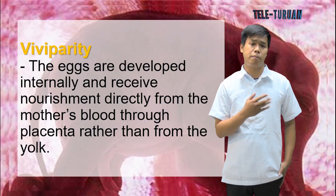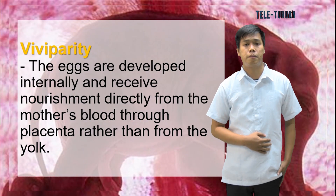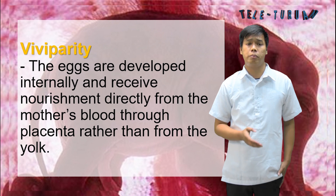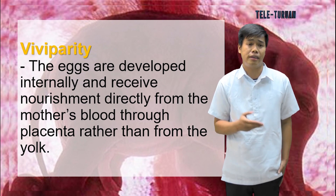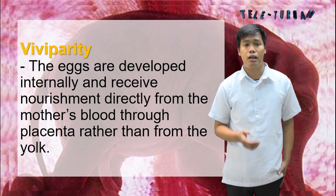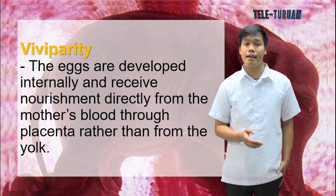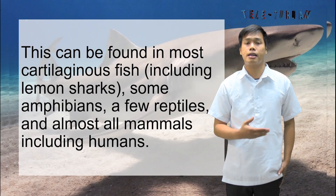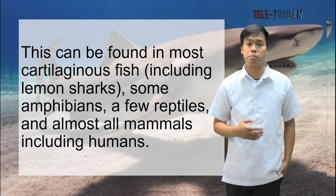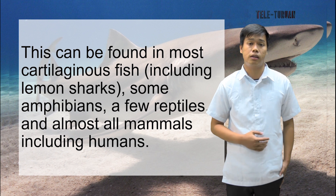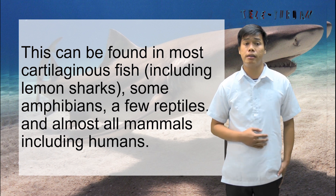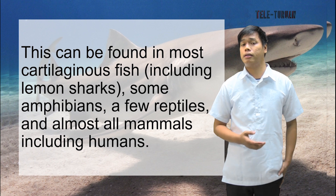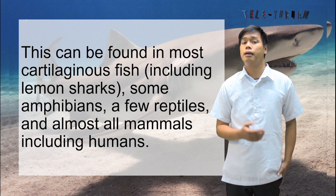Lastly is viviparity. In viviparity, the eggs are developed internally and receive nourishment directly from the mother's blood through the placenta, rather than from the yolk. This can be found in most cartilaginous species including the lemon shark, most amphibians, a few reptiles, and most mammals including humans.